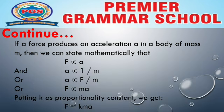If a force produces an acceleration a in a body of mass m, then we can state mathematically: F is directly proportional to a, and a is directly proportional to 1/m. یعنی force اور acceleration آپس میں directly proportional ہیں، اور acceleration اور mass آپس میں inversely proportional ہیں۔ Inversely proportional لکھنے کے لیے ہم one over کی form دیتے ہیں۔ دونوں کو combine کریں تو a is directly proportional to F/m۔